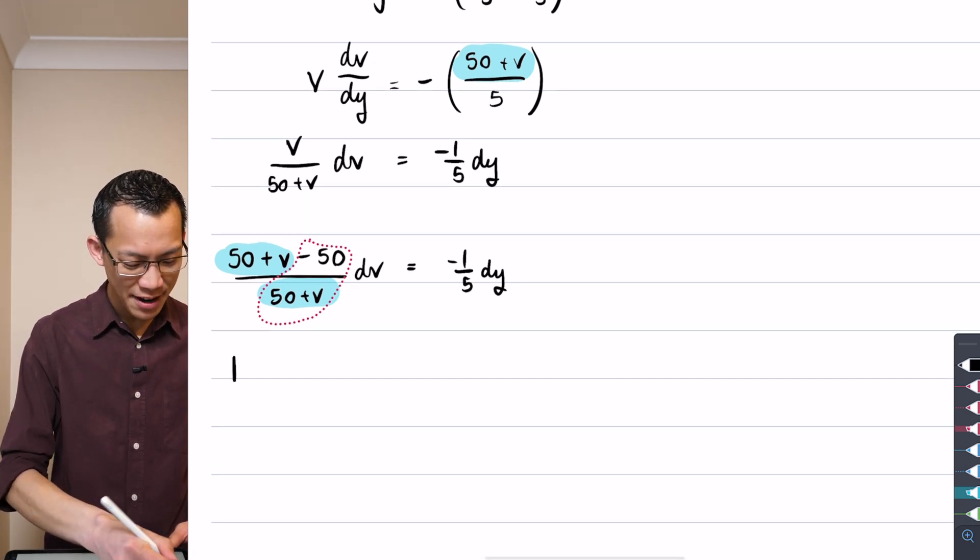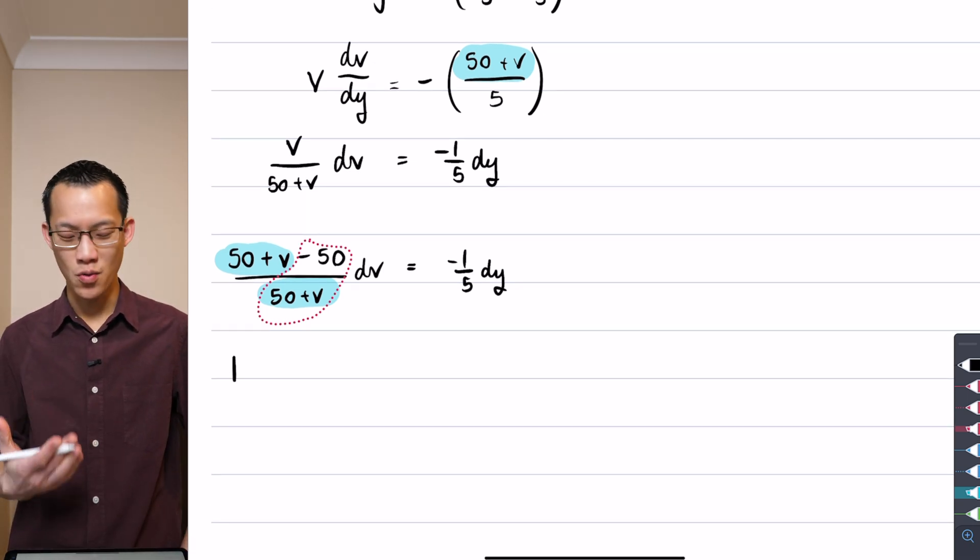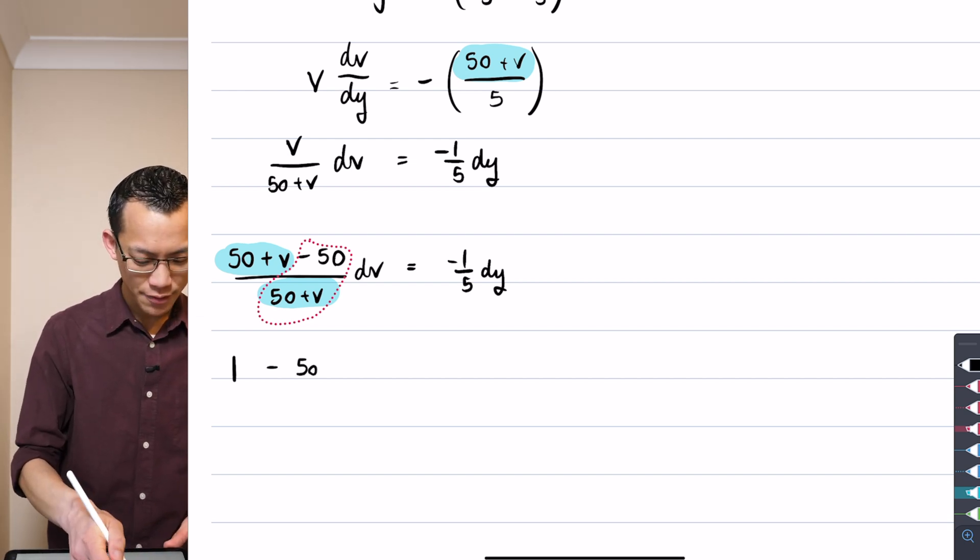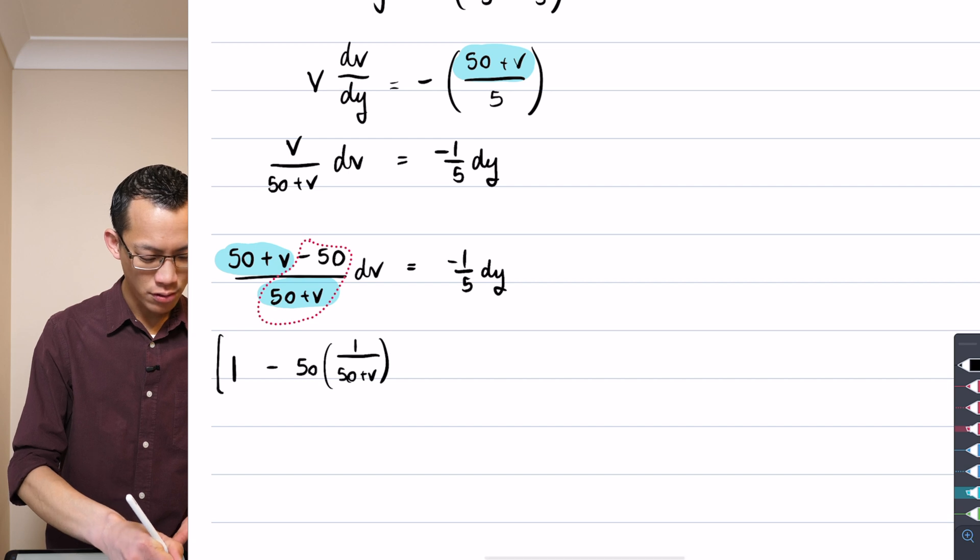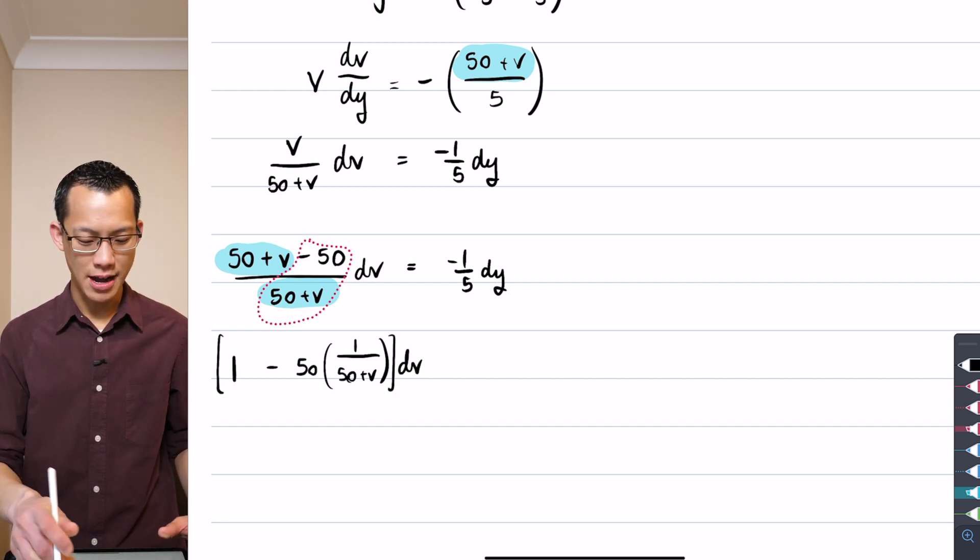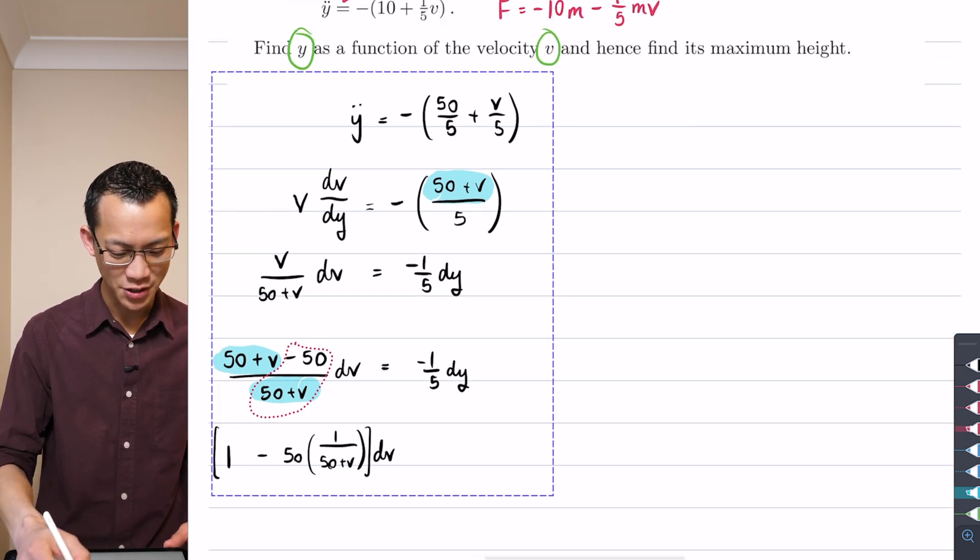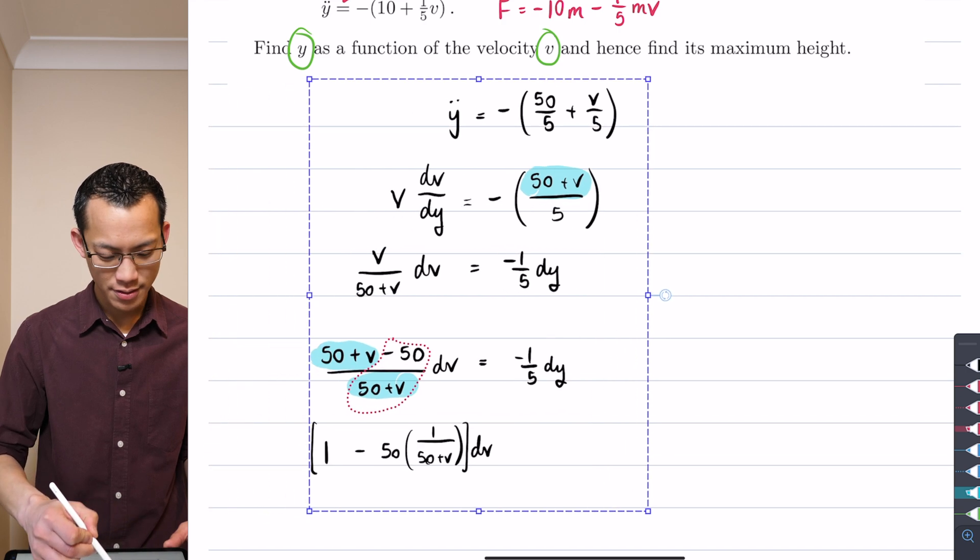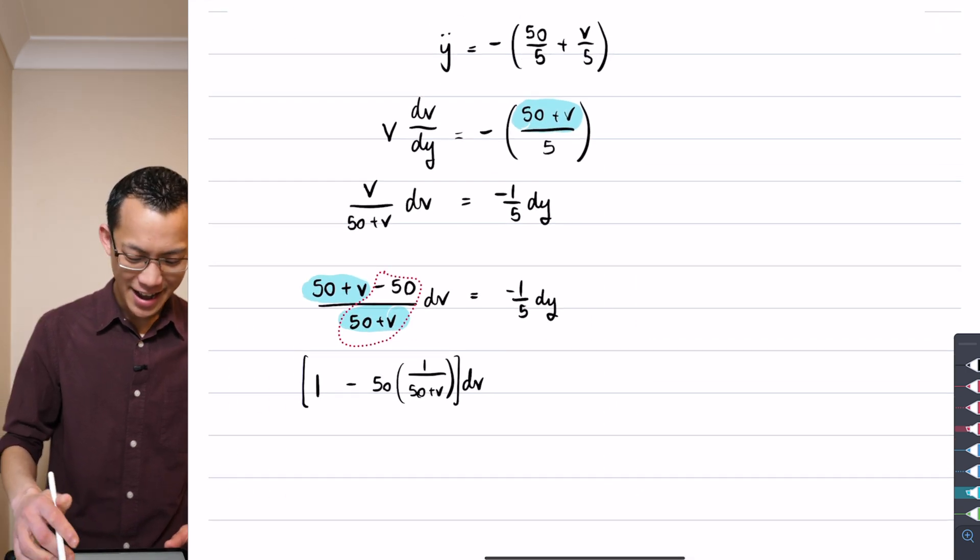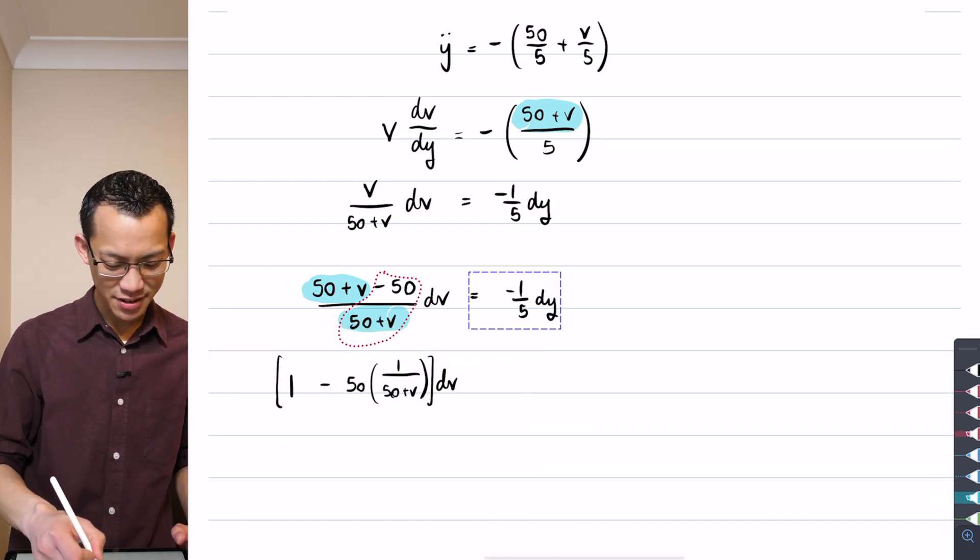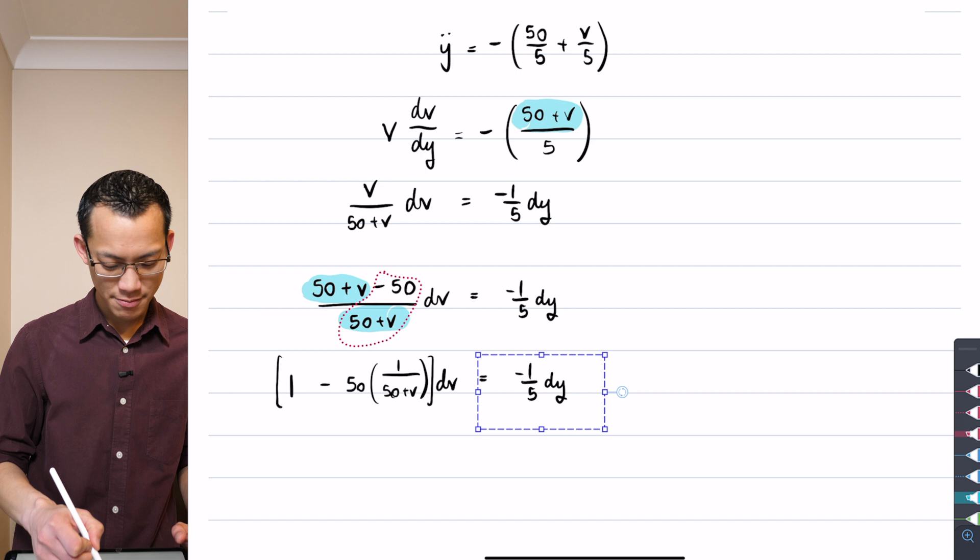Let's have a go. I'm going to separate that 50 plus v on 50 plus v as 1. Then I'm going to say minus 50 lots of, and then I've got 1 on 50 plus v there. And all of this has a dv attached to it. I'm just going to move, I'm running out of space over on the left-hand side here. It's just sort of ballooning out. So, let's actually move it over. Sorry, I'm cheating. I know you can't do that. Let's move that over so I have a bit more room to breathe.